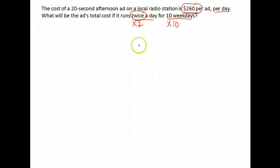So for the daily rate, we're going to run twice. So it's $520 for each day, but it's going to run for 10 days. So we multiply that by 10. And we get a total of $5,200 for this 20-second ad to run twice a day for 10 days.